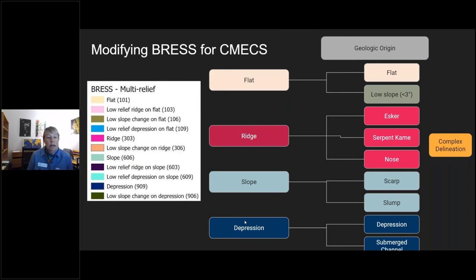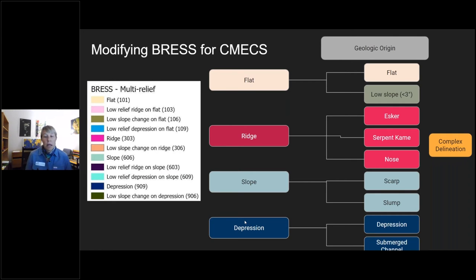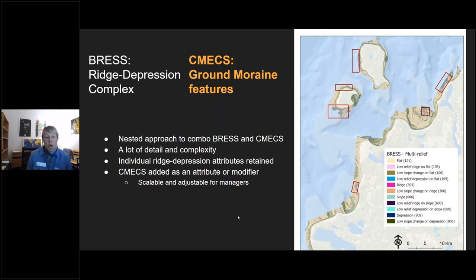To get from BRESS — which has a fairly simple output of bathymetric features — into the CMEX framework, the flat, ridge, slope, and depression outputs fit well into geologic origin features. Flat is flat; one flat category is low slope change on a flat. Ridges can be defined into eskers, different kames, noses, slope scarps, and slumps. There are also various types of depression, and beyond single features there is the concept of complexes.